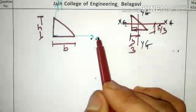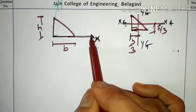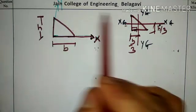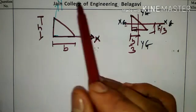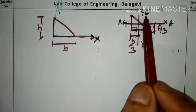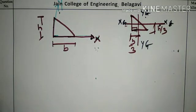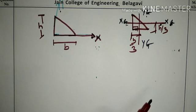First, we shall try to find the value of IXX, then we shall try to find the value of IXG. For the second case, we will try to find the value of IYY, then the value of IYG. This procedure and steps remain the same as we adopted to calculate the centroid for the triangular section.